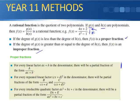For every linear factor (ax + b) in the denominator, there will be a partial fraction of the form A divided by (ax + b). For every repeated linear factor (cx + d)² in the denominator, there will be partial fractions B/(cx + d) and C/(cx + d)². For every irreducible quadratic factor — meaning we cannot factorise it — there will be a partial fraction of the form (dx + e) divided by (ax² + bx + c).